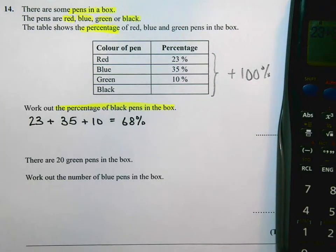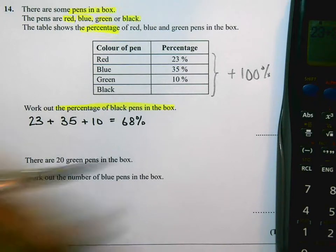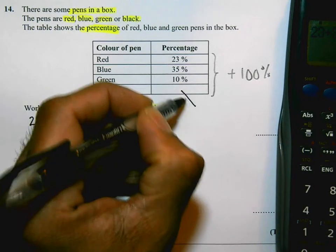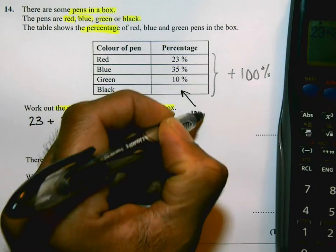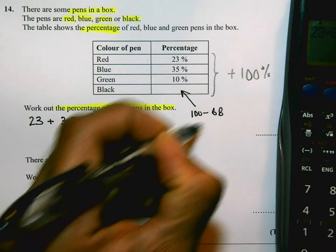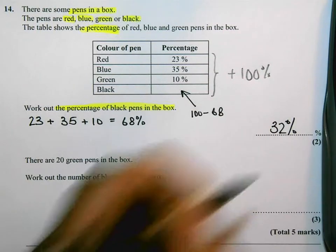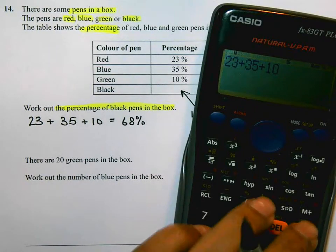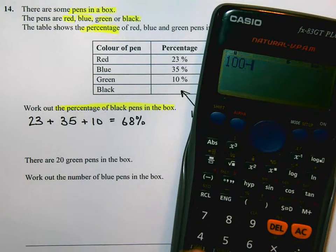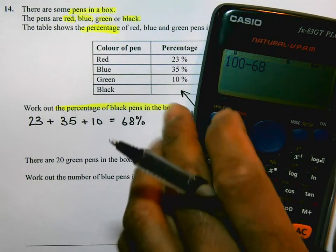Okay, and so to work out the missing one, that's going to be 100 take away 68. That's going to be 32%. Okay, let me just check. Yep, 32%. Alright.